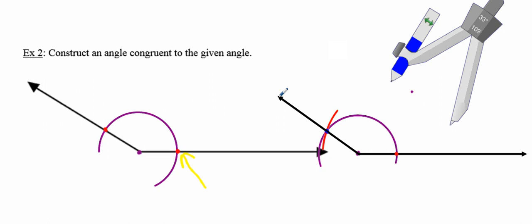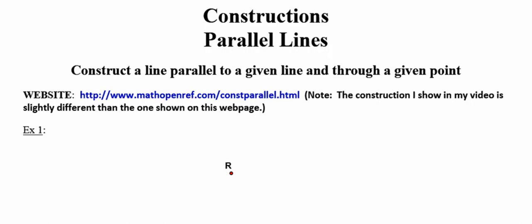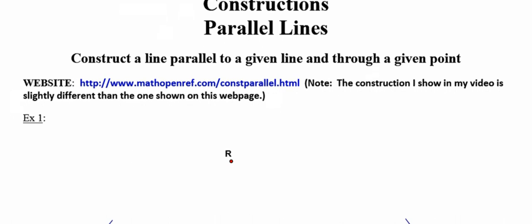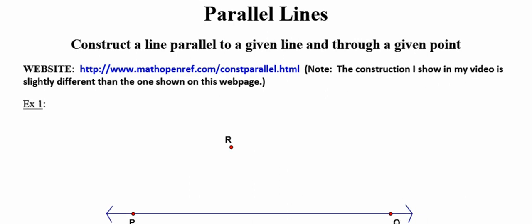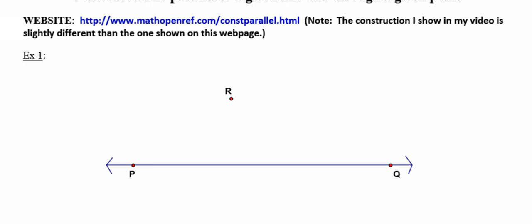That's the first construction you need to master. Remember, the flipped classroom lets you rewind and replay as many times as you need. The second construction has to do with parallel lines. I'll show a method slightly different from Math Open Reference — you can use either on a quiz, test, midterm, or Regents exam. Math Open Reference uses congruent corresponding angles; I'll use perpendicular lines, which we've been practicing, to construct parallel lines.